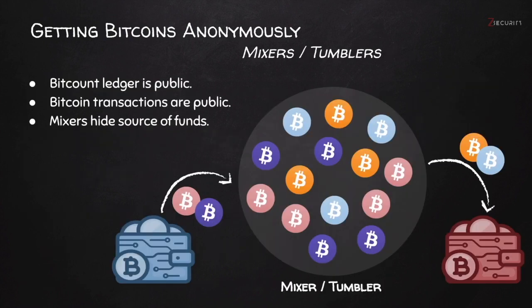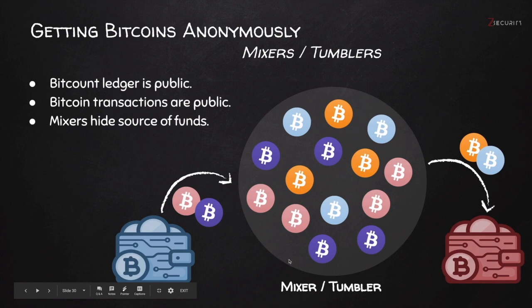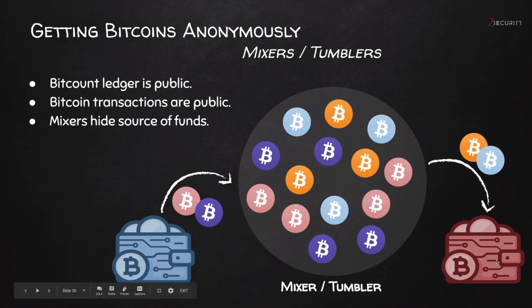This is where tumblers and mixers come into play. The idea is simple: you send your coins to a server or service available to a number of people, not only you, and then this service sends your money to a different wallet, breaking the connection between the sender and the receiver. You can actually chain multiple mixers — sending to mixer one, mixer two, mixer three, and then to your wallet or someone else's wallet.